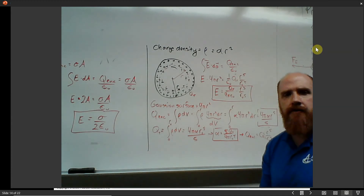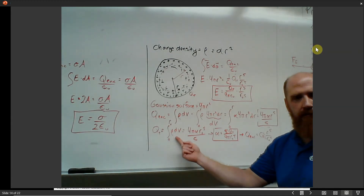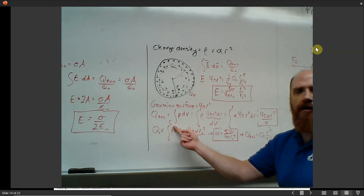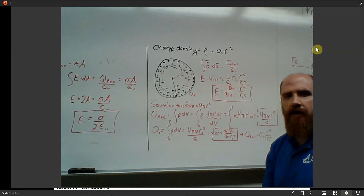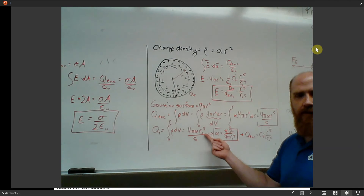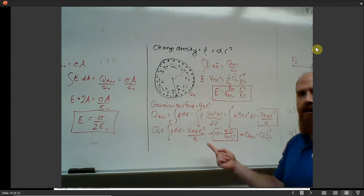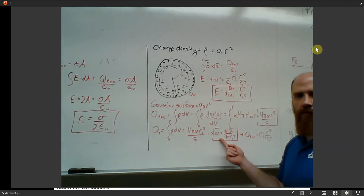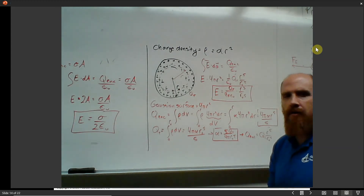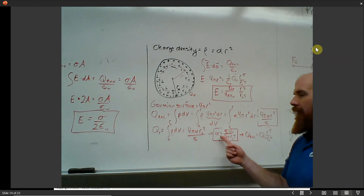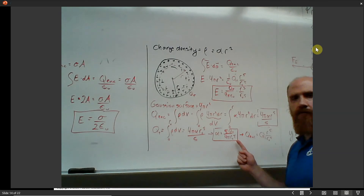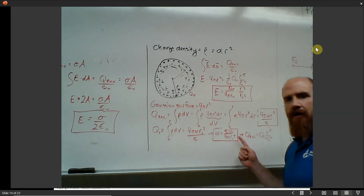They want us to write alpha in terms of total charge. The total charge must be the volume charge density integrated over the entire sphere from zero to the full outer radius r-naught. Using the same integral but with the fixed limit r-naught gives us alpha. So alpha equals 5q_total divided by 4π·r-naught to the fifth, where r-naught is the fixed radius of the sphere.